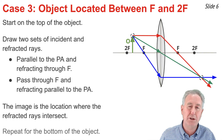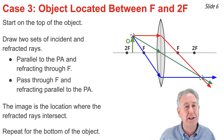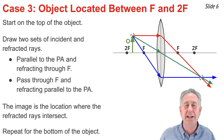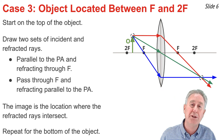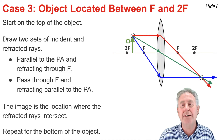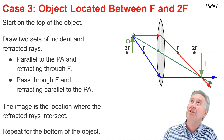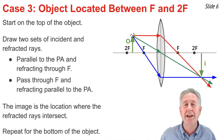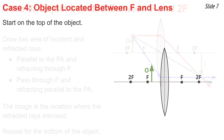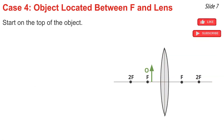To find the complete image, I repeat the process for the bottom of the object. Since the bottom of the object is on the principal axis, the bottom of the image is on the principal axis as well. So the complete image can be drawn in green from the principal axis down to the intersection point, as shown on the diagram.